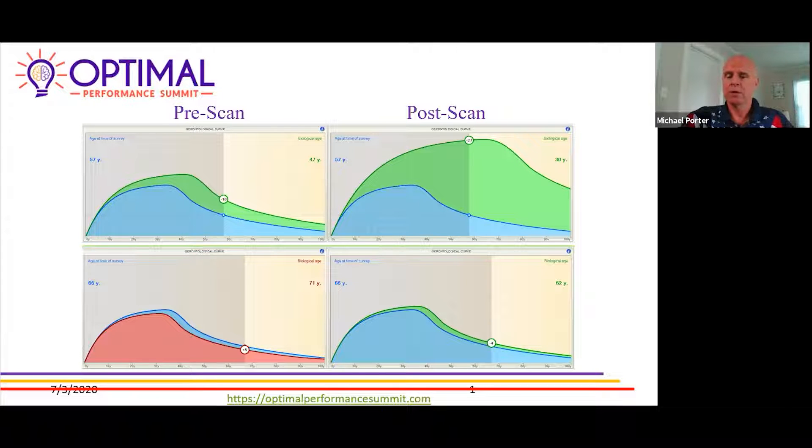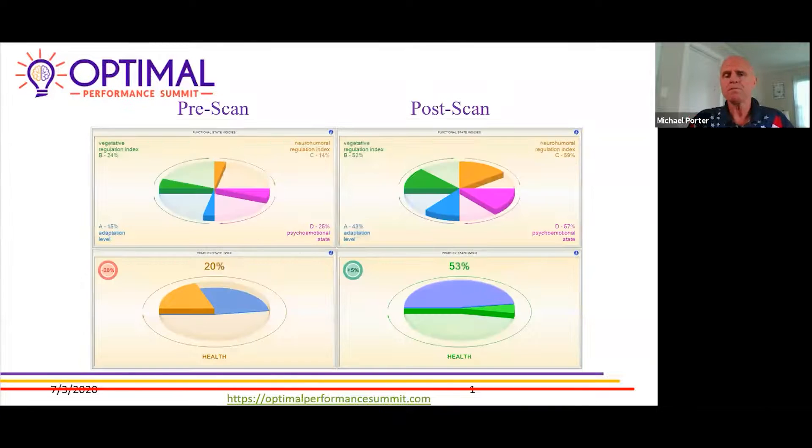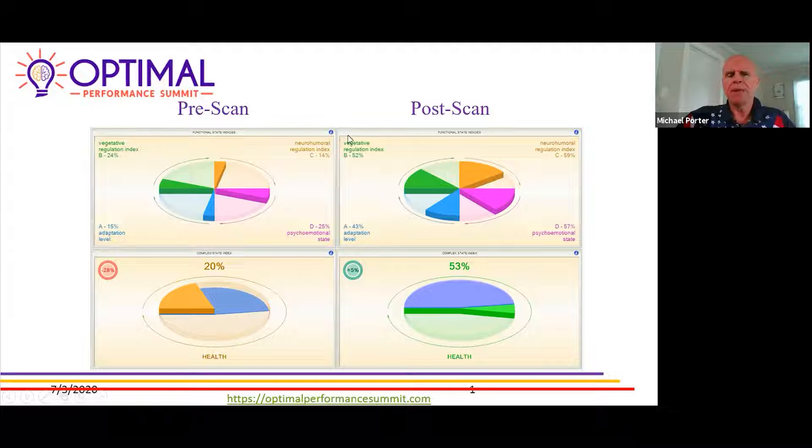This complex analysis tab kind of summarizes what we were just going over. The green being the autonomic nervous system, the blue being their cardiovascular adaptation, neurohormonal regulation, cycle motion. It gives us an idea where all four of those regulatory systems were—they were at 20 percent.